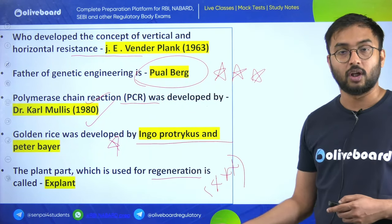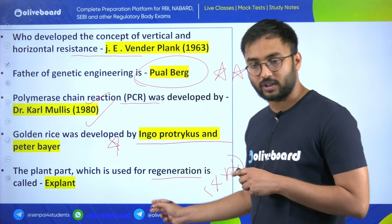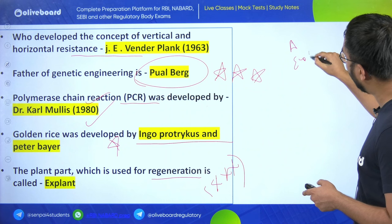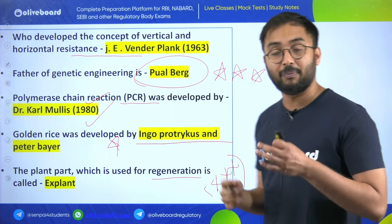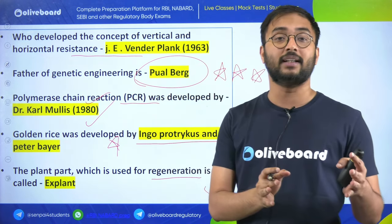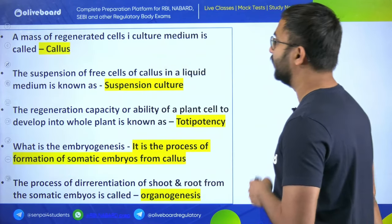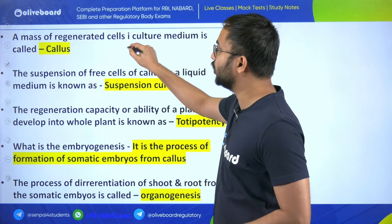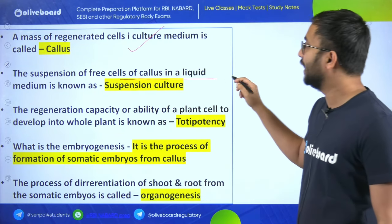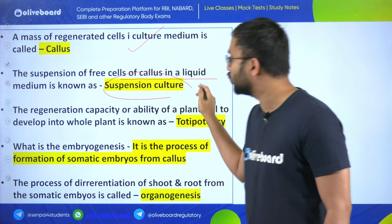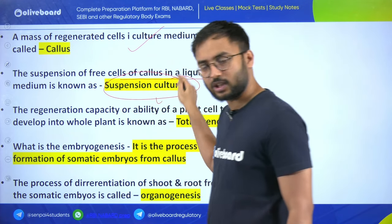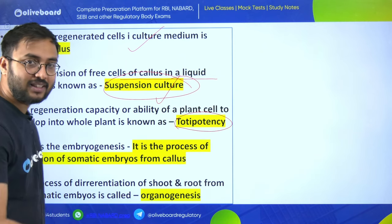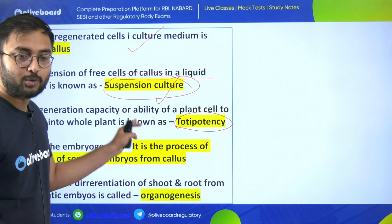Such questions are asked in various state agriculture exams - they may ask which part of the plant is used for regeneration, and the answer is explant. In agriculture exams these days, environmental plus biotechnology questions are asked related to genetics and plant breeding chapters. A mass of regenerated cells in cell culture medium is called callus. Suspension of free cells of callus in a liquid medium is known as suspension culture.